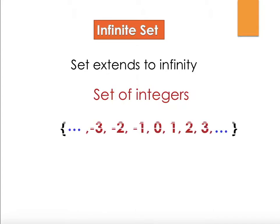Let's look at the set of integers as an example of an infinite set. On either side we have dot-dot-dot, meaning the set continues in both the left and right directions. So we call it an infinite set — there is no limit to it.